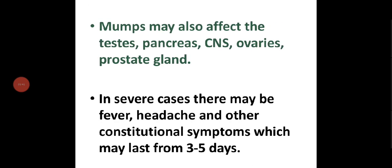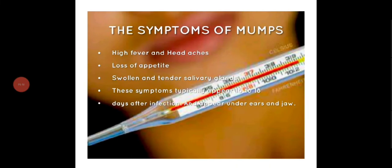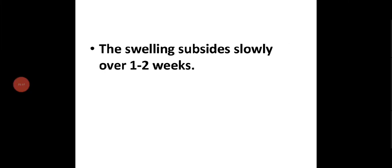Mumps may also affect the testis, pancreas, CNS, ovaries, and the prostate gland. In severe cases, there may be fever, headache, and other constitutional symptoms which may last three to five days and subside within one week. Symptoms include high fever, headache, loss of appetite, and swollen and tender salivary glands, appearing 16 to 18 days after infection. The swelling subsides slowly over one to two weeks.